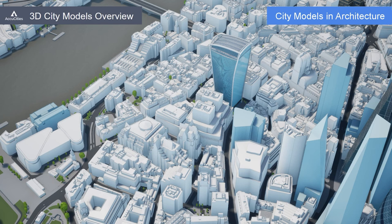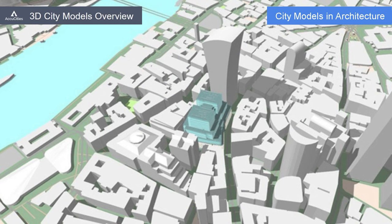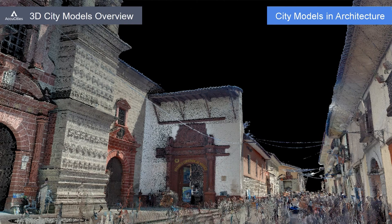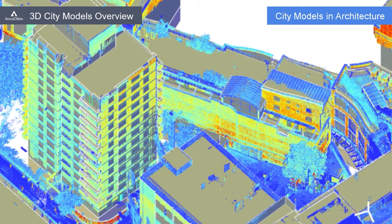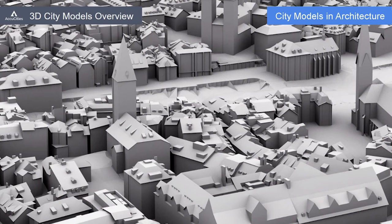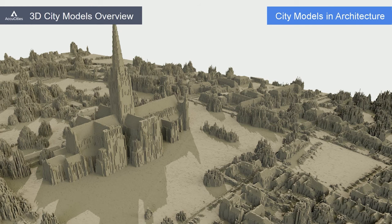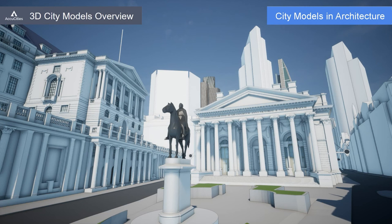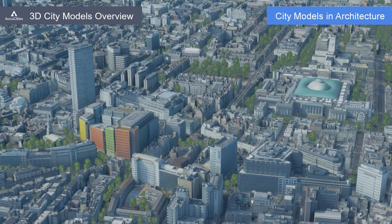The term '3D model' is an overarching term covering everything from simple extruded map polygon models all the way to custom-made millimetre-accuracy 3D scans. The 3D models vary greatly in terms of their accuracy, level of detail, recency and usability, as well as in terms of their costs, delivery time and file format.